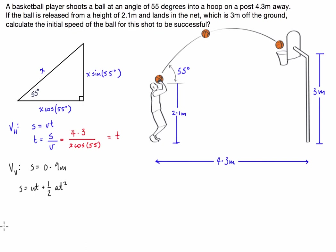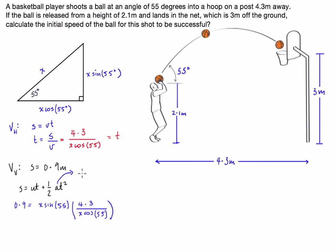Let's substitute everything we know in. Our vertical displacement is 0.9 metres, and that's equal to our initial velocity in the vertical direction, which is x sine of 55, times the time — which we write as 4.3 over x cosine of 55. Our acceleration is negative 9.8 metres per second squared, so half of that is negative 4.9. So we minus 4.9 times the time, which is again 4.3 over x cosine of 55, and all of that is squared.